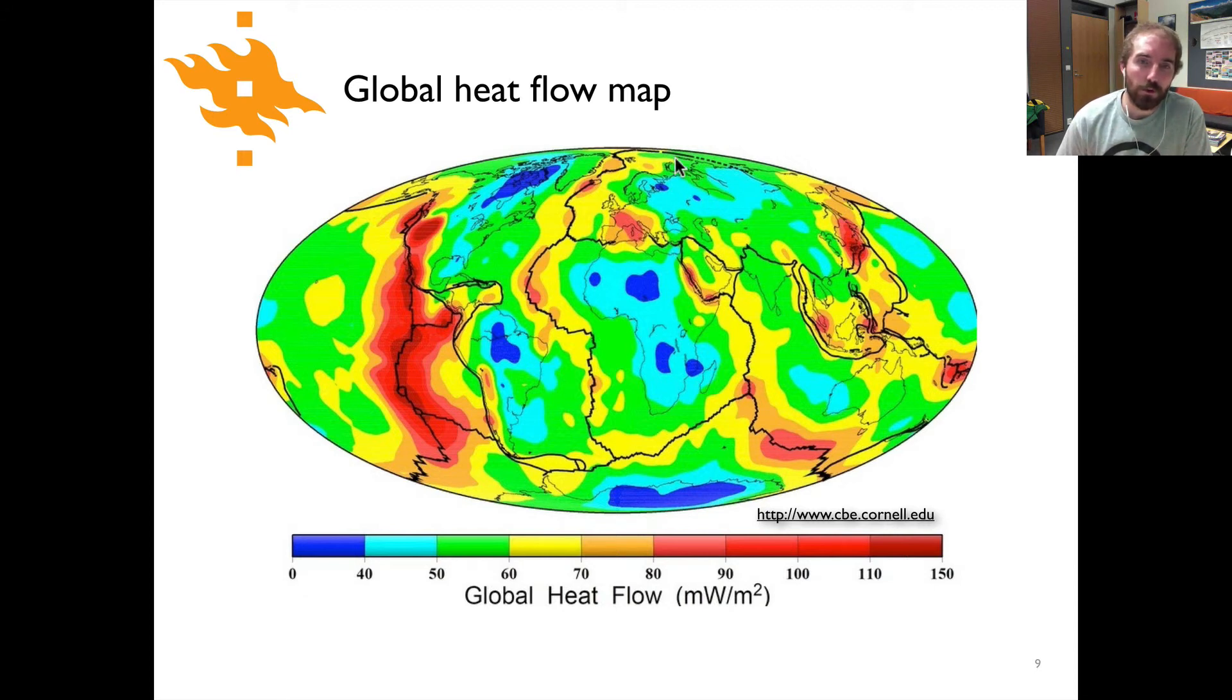So if we look here for instance up in northern Europe in our shield setting, we can see that we have relatively low heat flow values. The same is true for shield settings like the northern part of Canada, much of Africa, and the central part of South America where there's not much tectonic activity and we have very old stable continental interior.